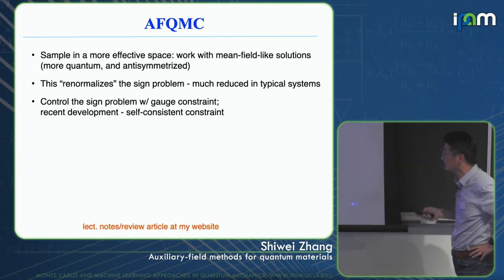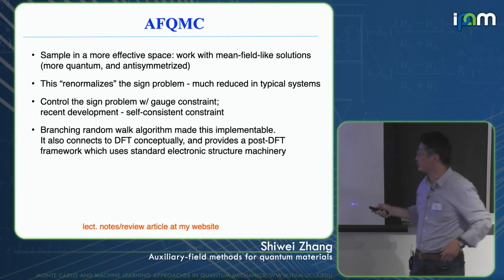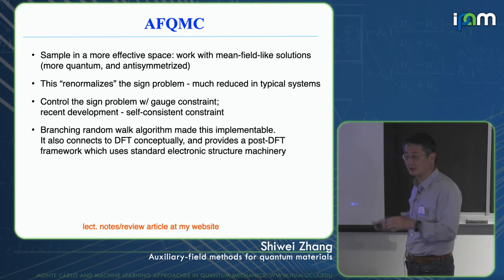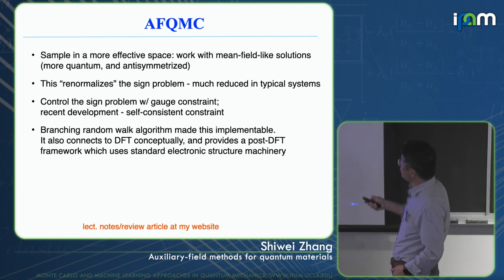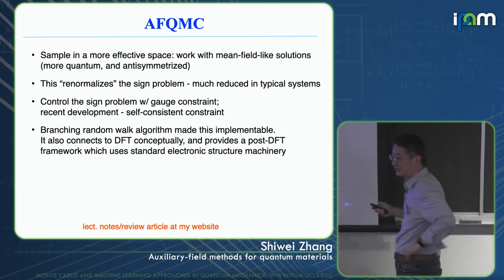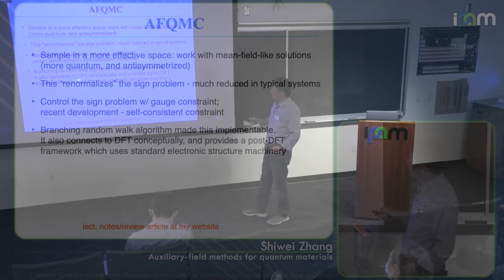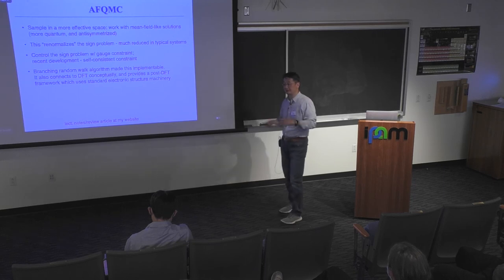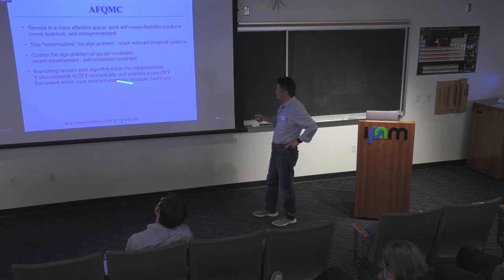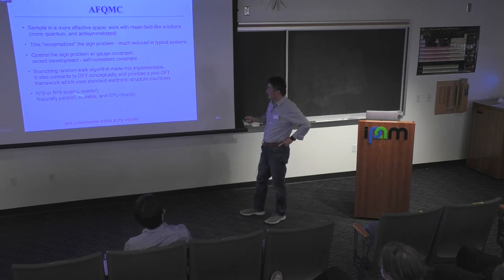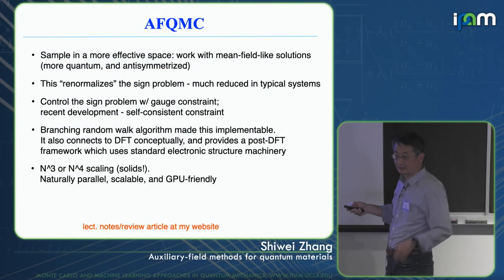Recent developments include a self-consistent constraint. The branching random walks — determinants picking up bigger or smaller weights just like in FCIQMC or DMC — make it possible to implement this constraint ergodically, which a lattice gauge formalism would not. Conceptually it also connects to DFT because it looks like imaginary-time-dependent DFT, allowing use of standard electronic structure machinery. AFQMC has low polynomial scaling — quite different in philosophy from FCIQMC, SHCI, or DMRG — and is parallel-scalable and GPU-friendly.